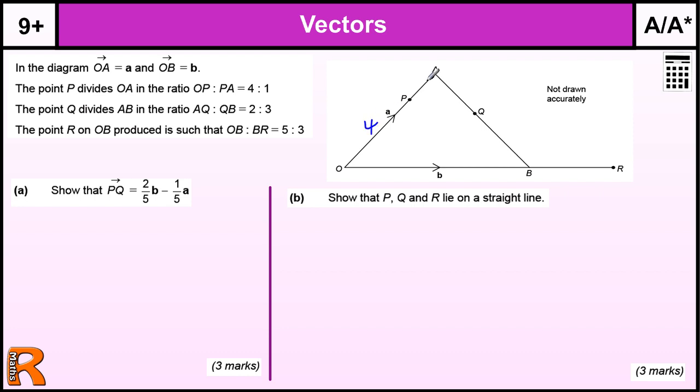So this P is 4 to 1 along this line and this Q is going to be A to Q is 2 and Q to B is 3. So this whole line is, in a sense, 5. So this P is 4 fifths of the way along that line or 1 fifth away from A and Q is going to be 2 fifths along this line.